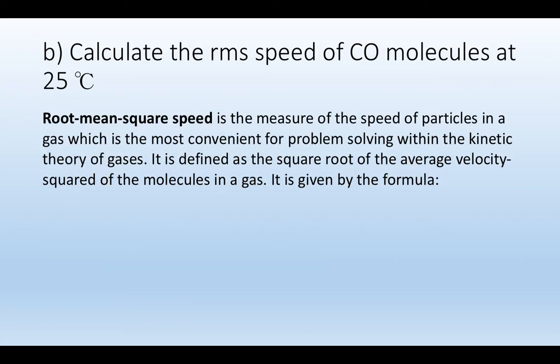The second one calculates the root mean square speed of carbon monoxide molecules at 25 degrees centigrade. Root mean square speed is the measure of the speed of particles in a gas, which is the most convenient for problem solving within the kinetic theory of gases. It is defined as the square root of the average velocity squared of the molecules in a gas. It is given by the formula: